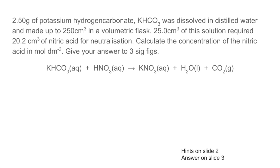They've then taken 25 cm³ of that solution and titrated it against nitric acid and there's the average titration: 20.2 cm³ of nitric acid required. So from that information, we can calculate the concentration of the nitric acid in moles per decimetre cubed and we're told that we have to give our answer to three significant figures. And obviously there's the chemical equation for the reaction.